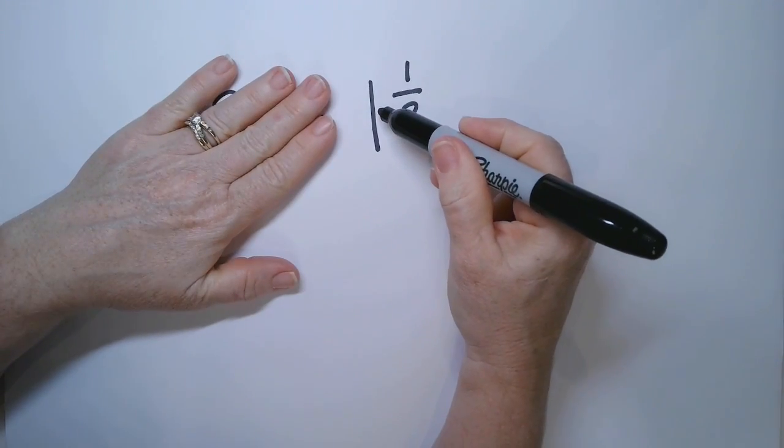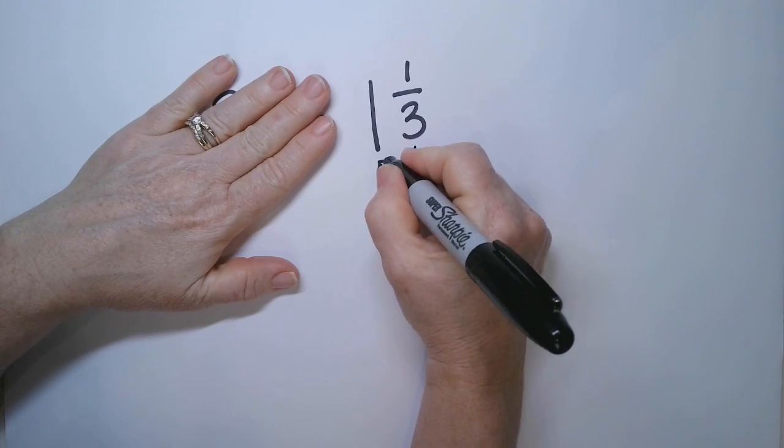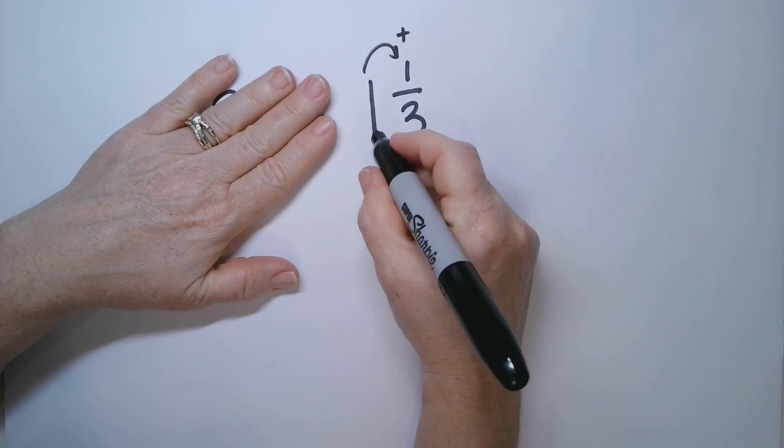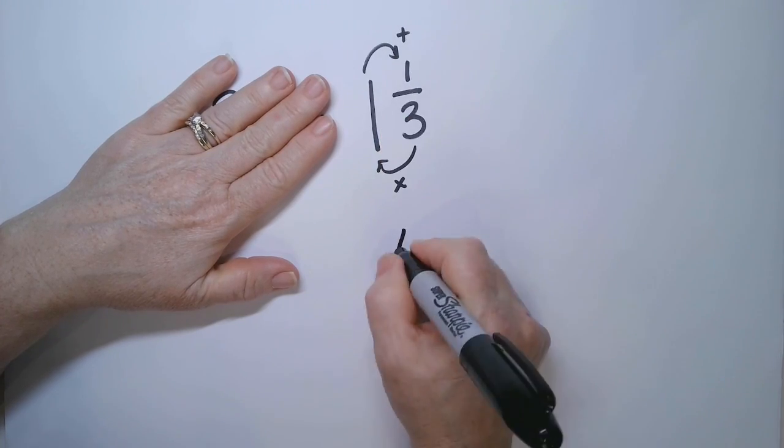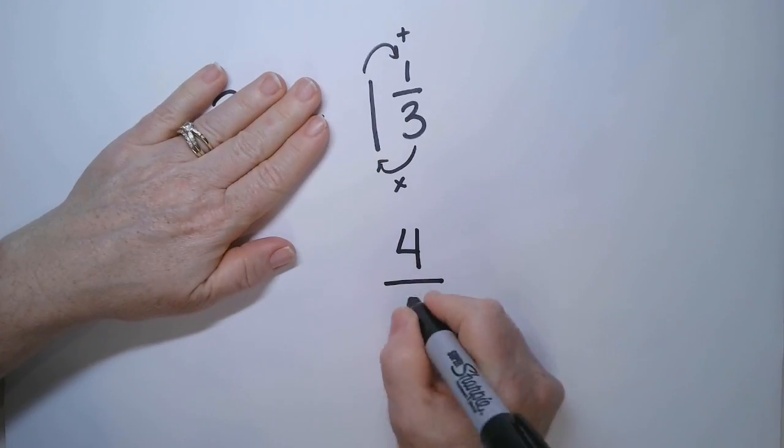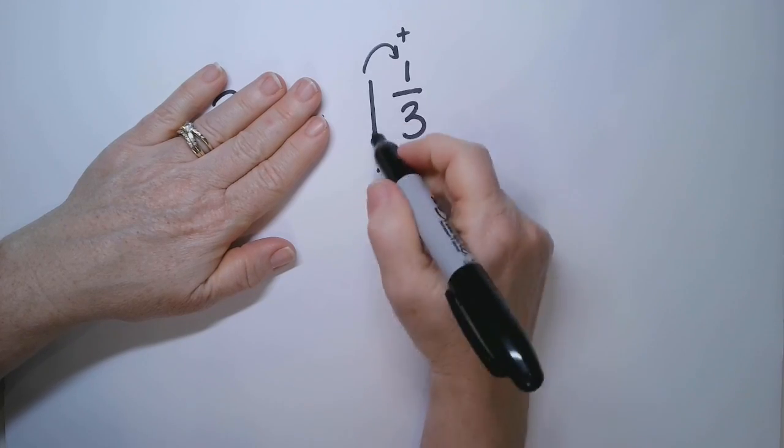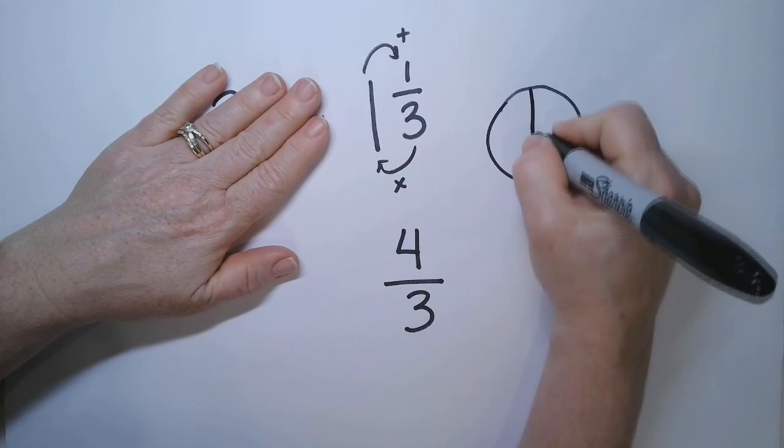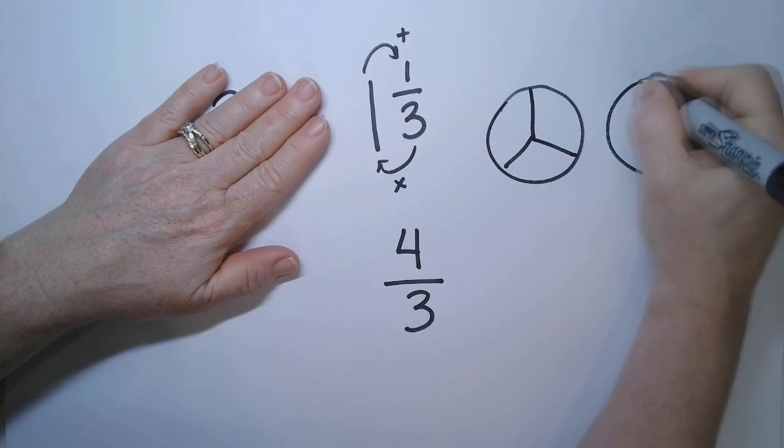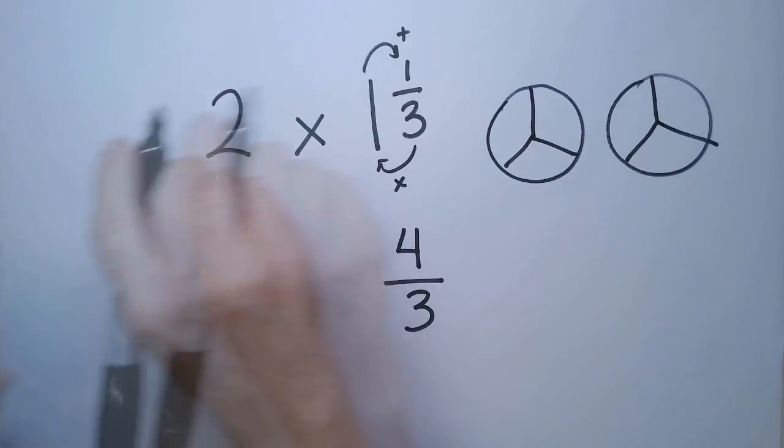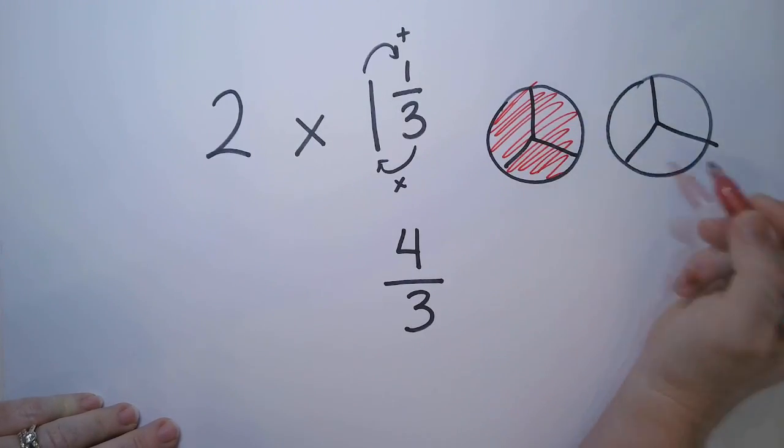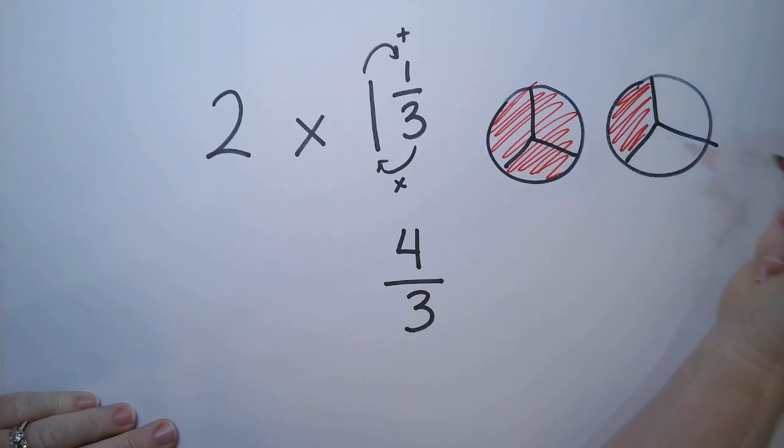So 1 times 3, we're going to multiply these things together, and then we're going to add this. 1 times 3 is 3 plus 1 is 4, and the denominator stays the same. Because this is 1 and 1 third is the same as 4 thirds, because here's 1 and 1 third. And if I color in the whole thing, that's 1, 2, 3 thirds plus 1 more third is here. So 1, 2, 3, 4 thirds.